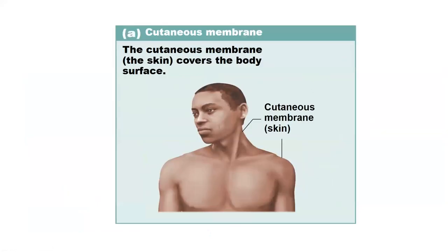The last membrane is the cutaneous membrane, which covers everywhere you can see on the external surface of the skin. It is a rough, dry membrane — not as moist as your mucous membrane — that typically covers the external surface.